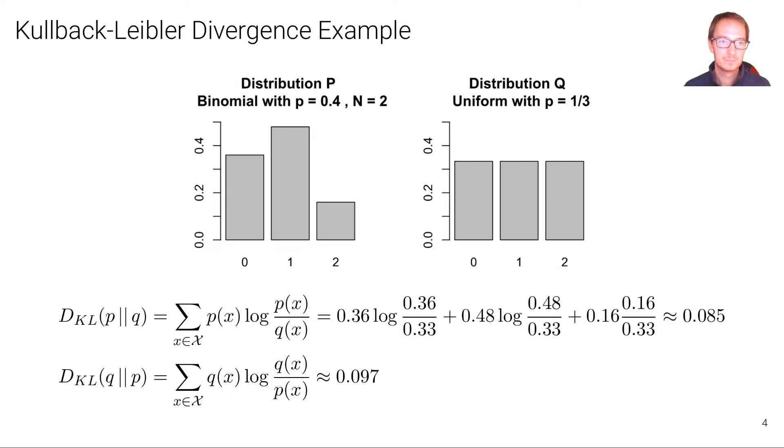Here's another example with discrete distributions. On the left, we have a binomial distribution with parameter 0.4, n equals 2, and that gives rise to this distribution here. So we have a non-uniform distribution on the left. And then we have a distribution over the same domain that is uniform, where we have equal probability one-third over all of these three possible states.